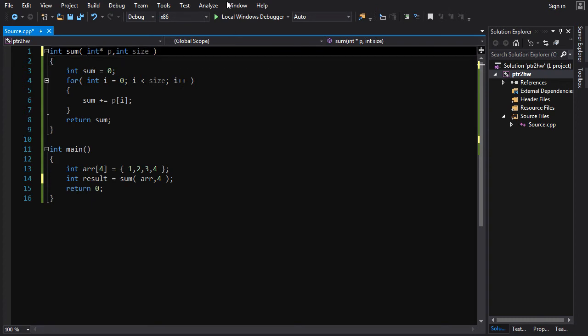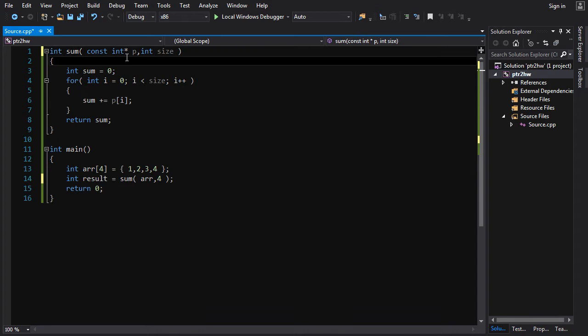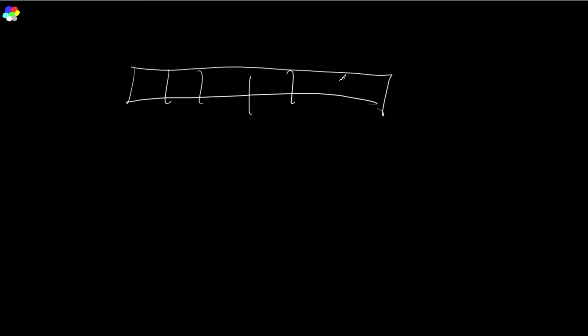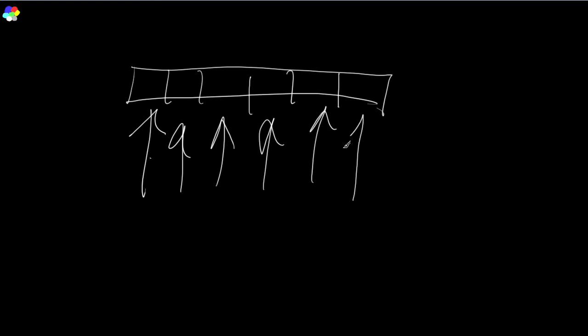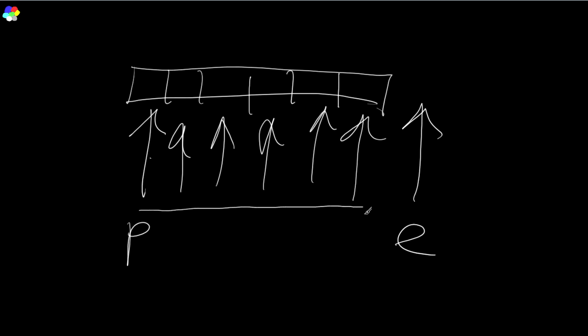First of all, we learned about constant correctness with pointers, so let's make this at least constant. The idea here is we're going to pass in a pointer to some array, and what we want to do is move that pointer to the right and access each element until we reach the end of the array. We're going to calculate some pointer `pe`, and we will move our pointer `p` to the right until it is equal to `pe`, or as long as it is less than `pe`.